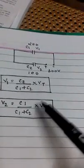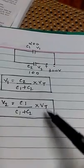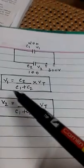And V2 is equal to C1 by total capacitance C1 plus C2 into voltage total. So this is a basic trick you can find out V1 and V2, and this is only applicable for series connection. So we can solve this easily.